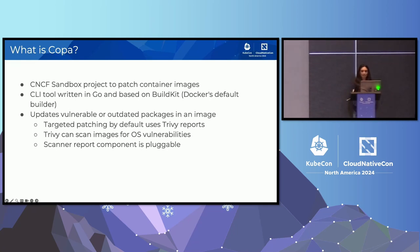Copa is a CNCF sandbox project, and it's a tool to directly patch container image vulnerabilities. It's written in Go and based on BuildKit, which is Docker's default builder. We use BuildKit to update the vulnerable and outdated packages in an image. By default, we do this using a scan report like Trivy, and we take a look at the OS vulnerabilities and update them to the latest version. This report is also pluggable with different scanner types.